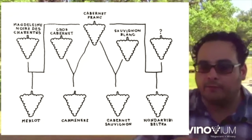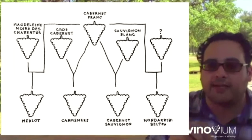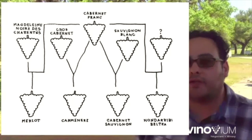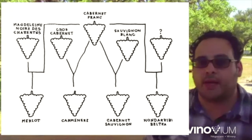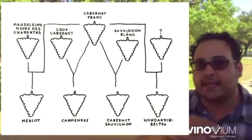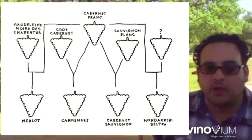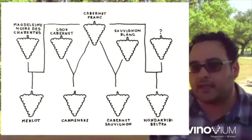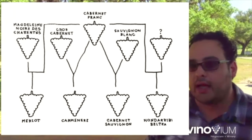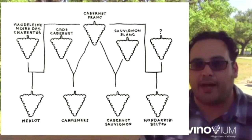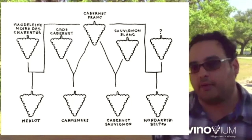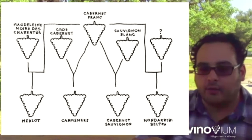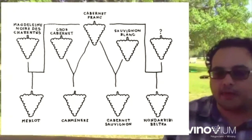Cabernet Franc is indigenous to the Pyrenees and the southwest part of France, and the northeastern border of Spain — the Basque Country. In the Basque Country, there's a grape called Hondarrabi Beltza, one of the classic varietals for Txakoli, a very famous super light-bodied, slightly sparkling wine from the Basque Country — really great with green olives and sardines.